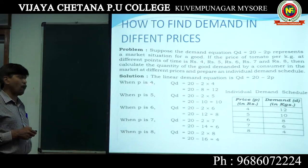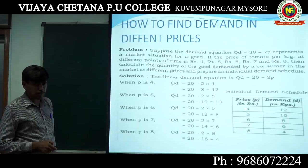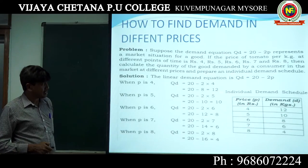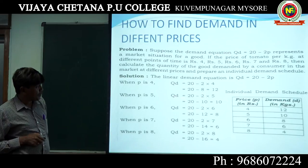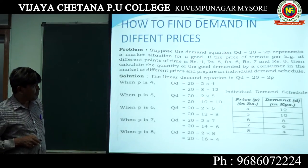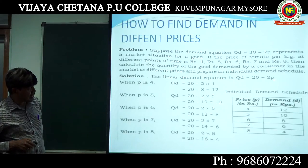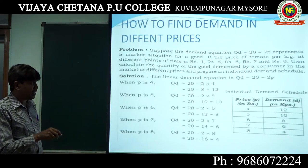If price increases by 1 rupee to 5: QD = 20 − 2(5) = 20 − 10 = 10. So demand decreases to 10. In the same way, substitute various prices in place of P and you get the quantity demanded. We find the quantity demanded at various price levels using this demand function. You have to follow this formula in the examination.